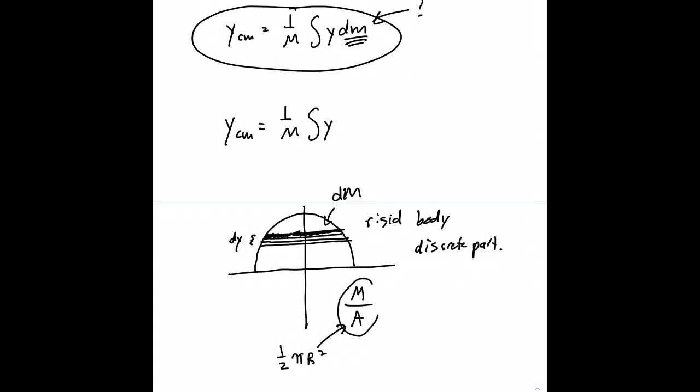When we do the calculation of the number of kilograms per square meter, we should get the same value for the whole semicircle as we do if we try to take the density, the kilograms per square meter, of just one of these slices. So one of these slices has a half width of x and a height of dy.